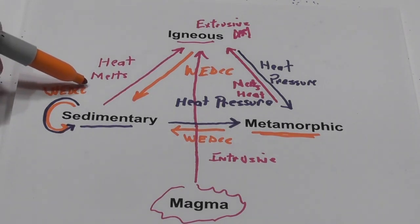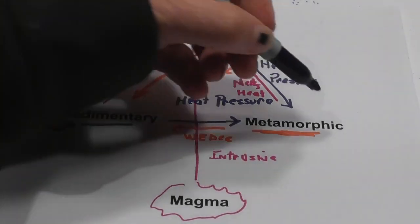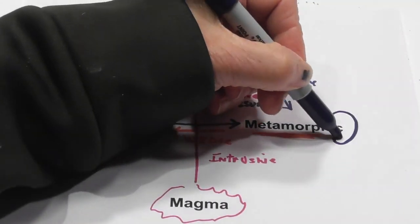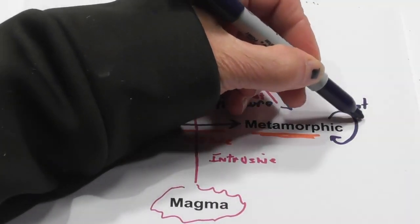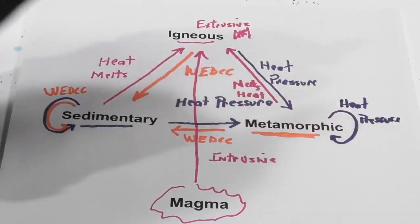And let me point out one other thing. The CC, the compaction and the cementation, sometimes that is called lithification. And then the metamorphic rock can become a metamorphic rock with heat and pressure. Sometimes that's called metamorphism.